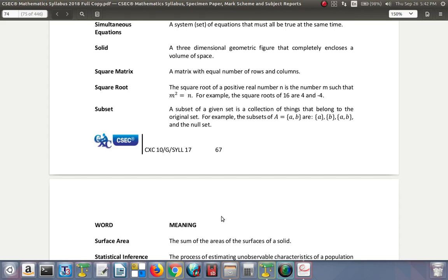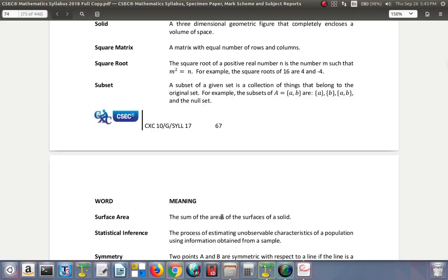Solid: a three-dimensional geometric figure that completely encloses a volume of space. Square matrix: a matrix with equal number of rows and columns. Square root: the square root of a positive real number n is the number m such that m squared is n. For example, the square root of 16 are 4 and negative 4. Subset: a subset of a given set is a collection of things that belong to the original set. Remember every set is a subset of itself and the null set is a subset of every set.